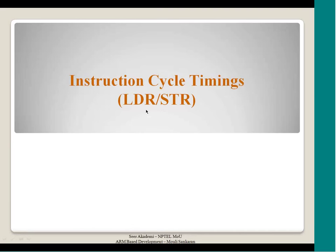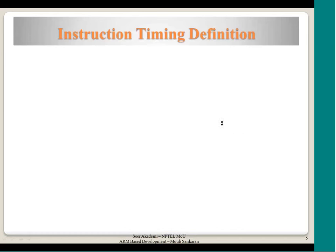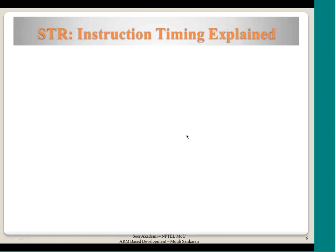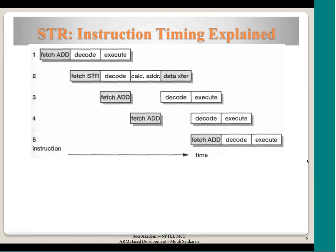Taking examples from LDR and STR, let us see how timing is calculated. The instruction timing is the measure of time spent by an instruction in the execute stage. Please remember, this is time spent in the execute stage specifically. You may wonder why we are not considering time spent in decode or fetch stages - because that is a parallelized operation in the pipeline; every instruction goes through those two stages.